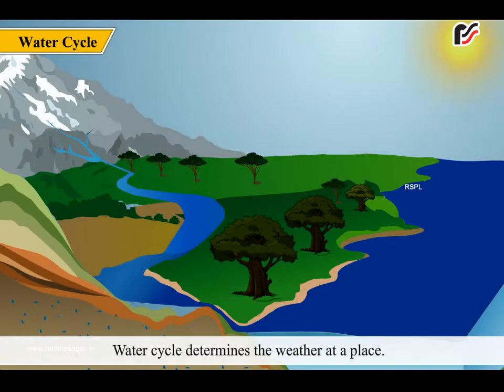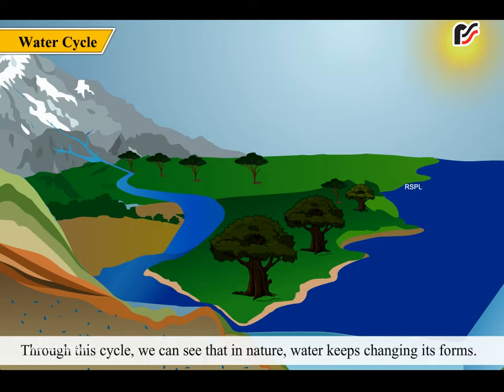Water cycle determines the weather at a place. Through this cycle, we can see that in nature, water keeps changing its forms.